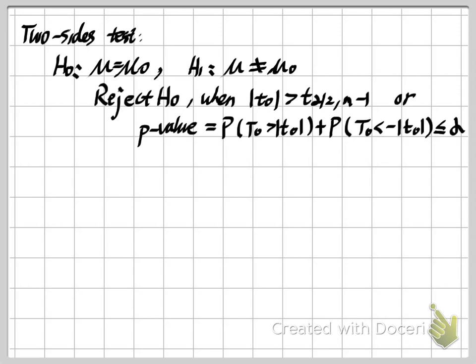We can also use the p-value to decide whether to reject H₀. For the two-sided test, the p-value is the probability that |T₀| > |t₀|, which equals P(T₀ > |t₀|) + P(T₀ < −|t₀|). If this sum of probabilities is less than or equal to alpha, then we reject H₀.